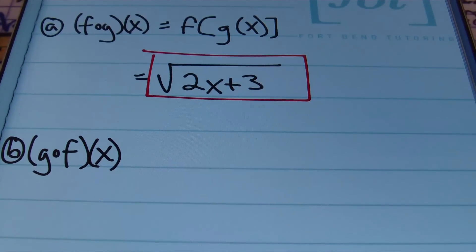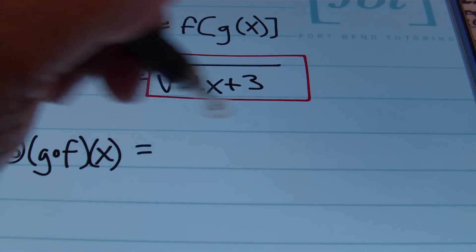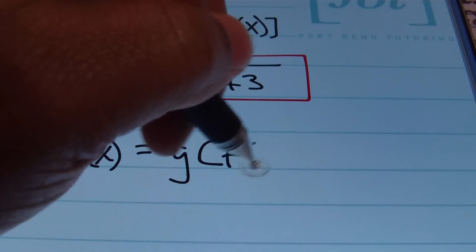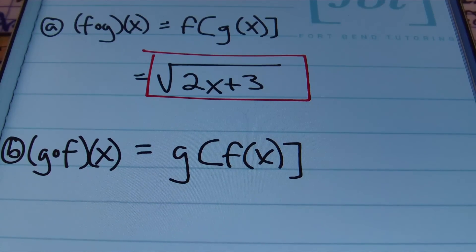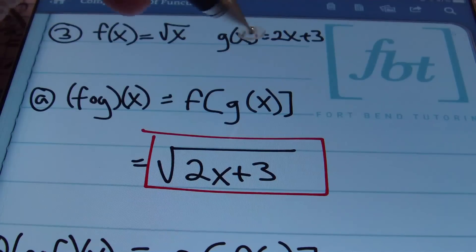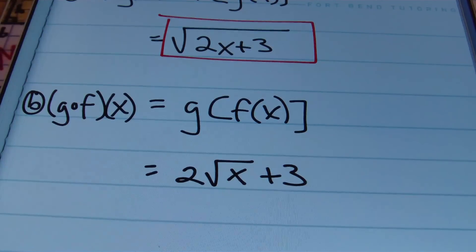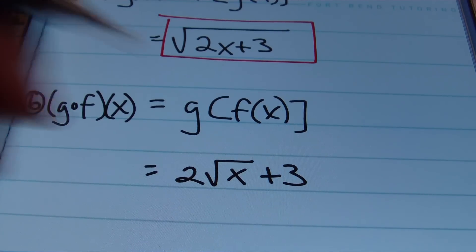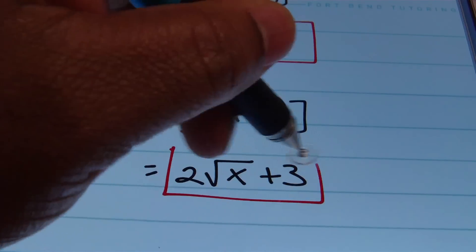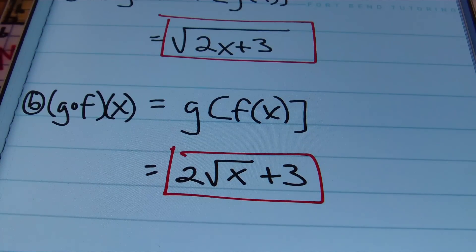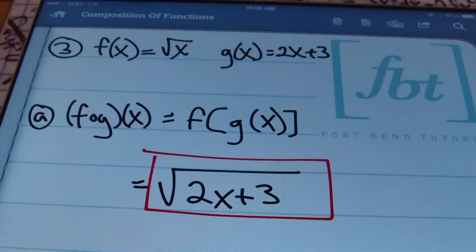In part B, using the same functions F and G, we find G composite F of X, meaning G of F of X. We plug the entire F function — which is the square root of X — into the G function where the variable X appears. This becomes 2 times the square root of X plus 3. There's nothing further to simplify with 2 times the square root of X plus 3 — that is the answer for G composite F of X.